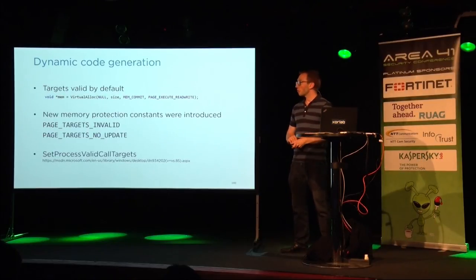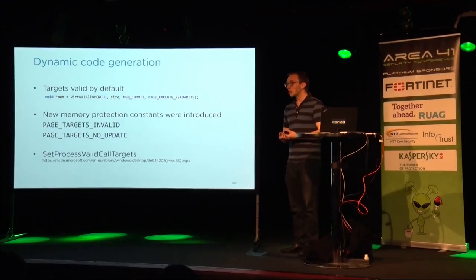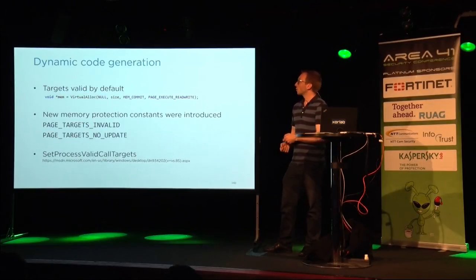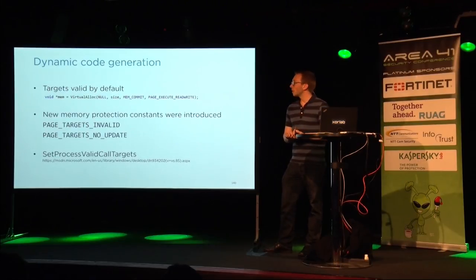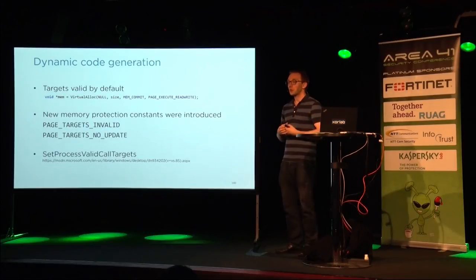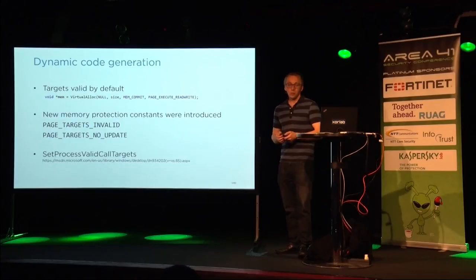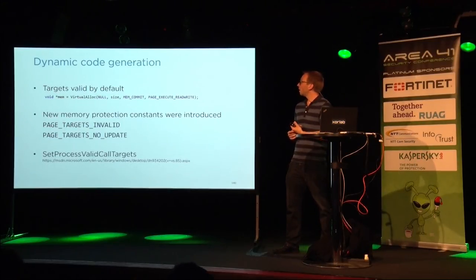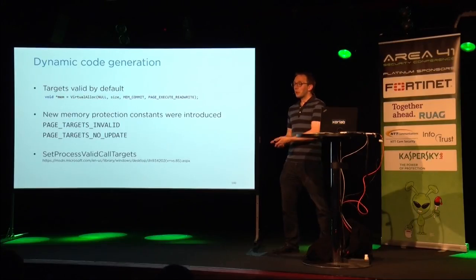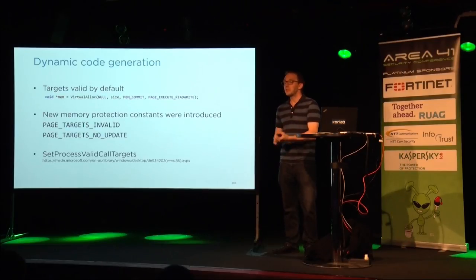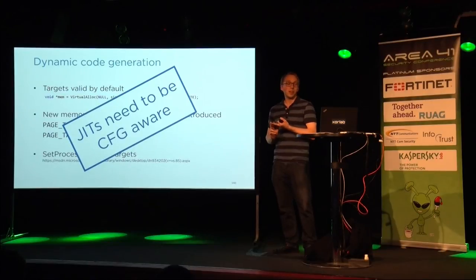Another thing to consider for Control Flow Guard is dynamic/JIT code. Most modern browsers and Java HotSpot generate code at runtime. When you allocate executable memory for JIT code, to remain backward compatible your CFG bitmap for that region needs to be initialized to one, allowing any indirect control flow transfer to that memory chunk. Microsoft introduced a new memory protection flag to harden JIT, giving programmers new functionality to specifically control the CFG bitmap. But the take-home message is: your JIT compiler needs to be CFG-aware.